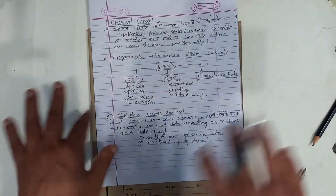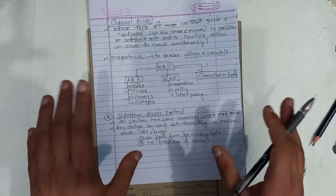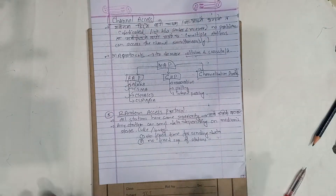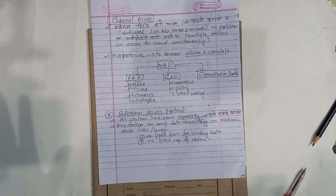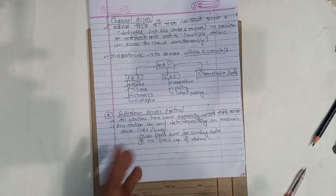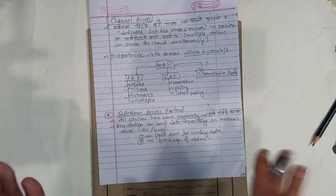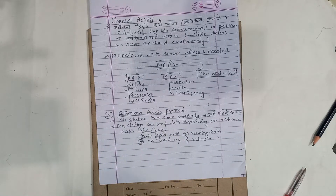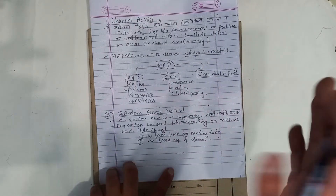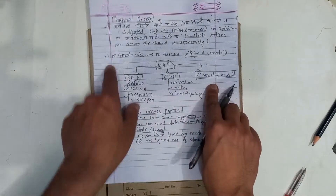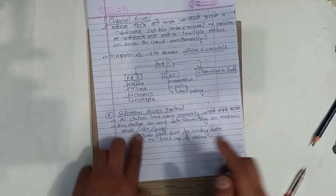Every device is connected, and all stations have the same priority. Any station can send data depending on the medium state — if the medium is idle, it is easy to send data. There is no fixed time for sending data and no fixed sequence of stations.